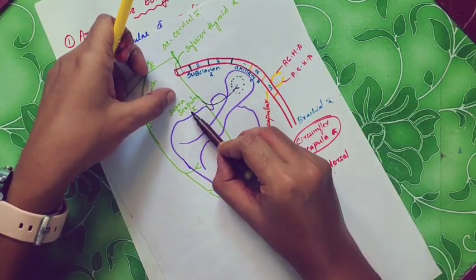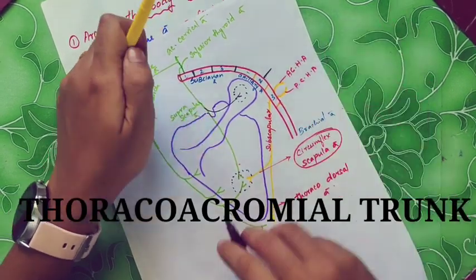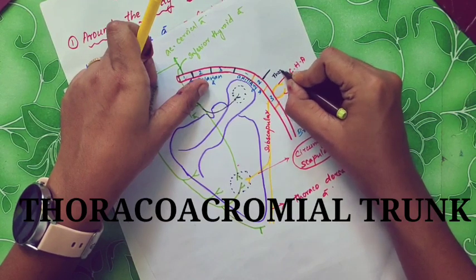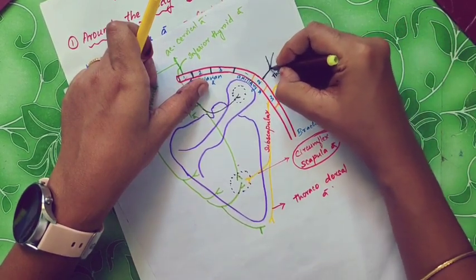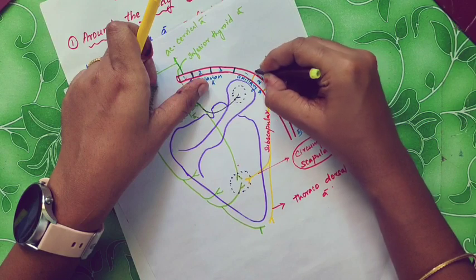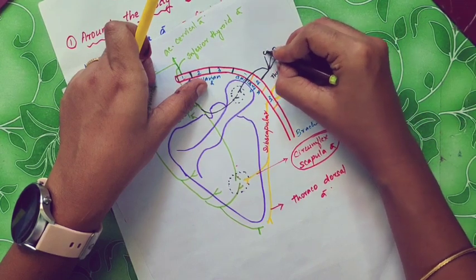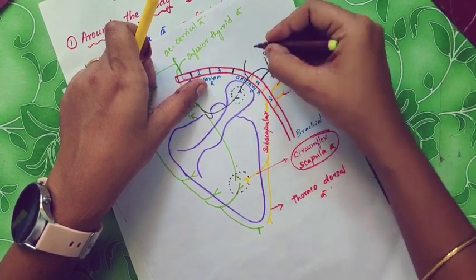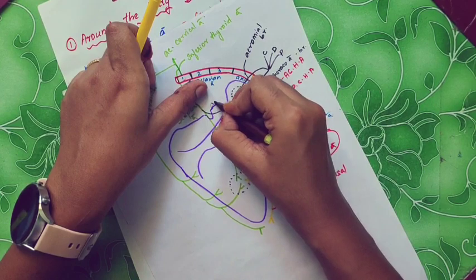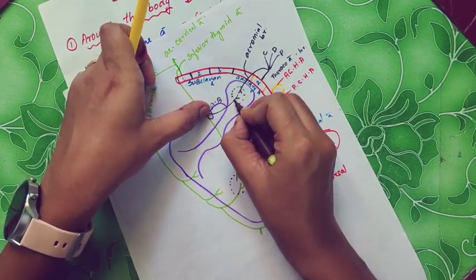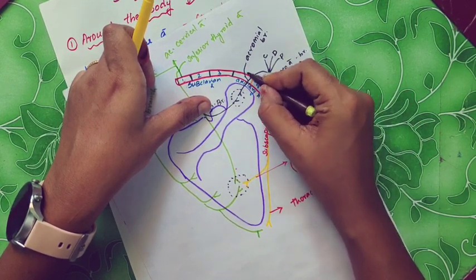The first acromial branch is from the suprascapular artery. In the second part of the axillary artery, there is a branch called the thoracoacromial artery. The thoracoacromial artery has four branches: the pectoral branch, the deltoid branch, the clavicular branch, and the acromial branch. So both the suprascapular artery and the thoracoacromial artery give an acromial branch to this anastomosis.